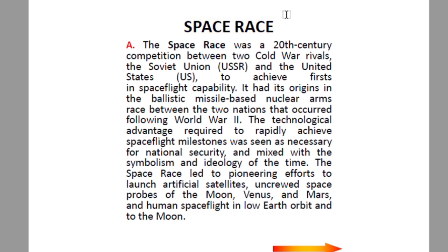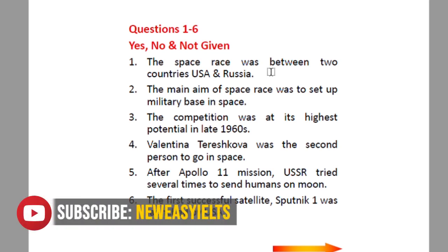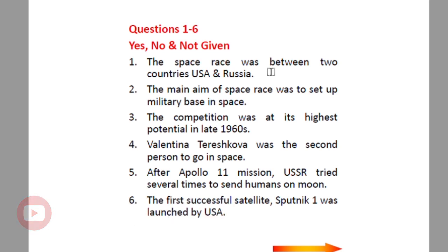There are six Yes/No/Not Given questions — or True/False/Not Given; both are nearly the same with not much difference. The first question is: 'The Space Race was between two countries, USA and Russia.' So the keywords here are: USA, Russia, and Space Race between two countries.